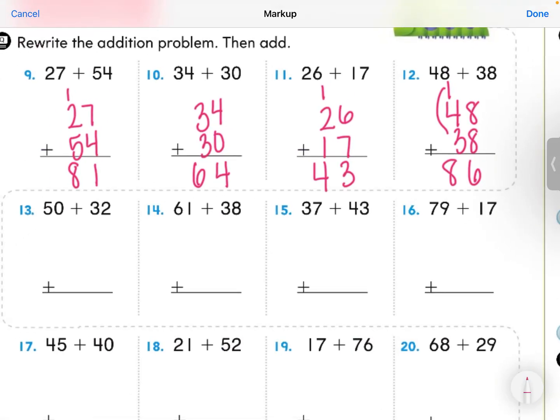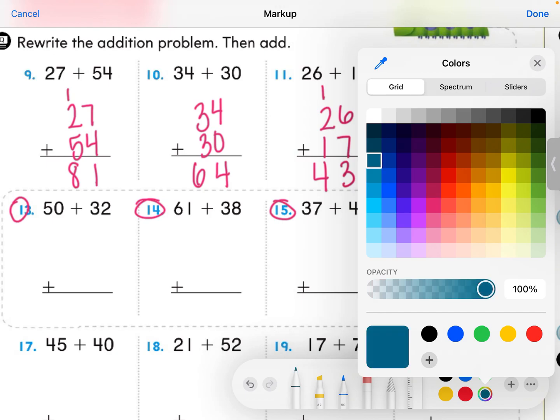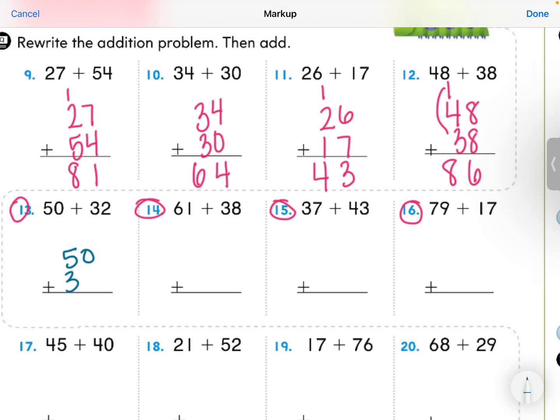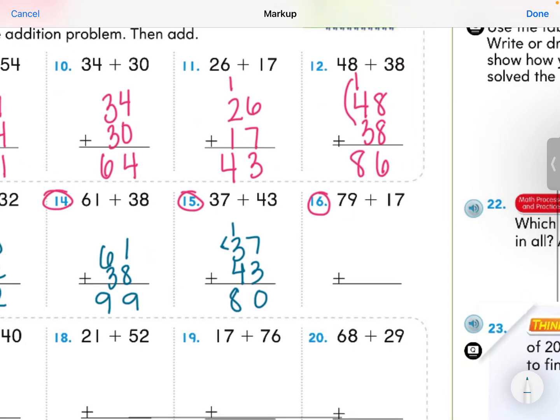Friends, if you feel like this is going really well for you, go ahead and work through this next row, which would be 13, 14, 15, and 16 on your own. Hit play when you are ready to see my answers. Let's see if we agree. 50 plus 32. 0 plus 2 is 2. 5 plus 3 is 8. 61 plus 38. 1 plus 8 is 9. 6 plus 3 is also 9. 37 plus 43. 7 plus 3 is 10. I'm going to put the 1 and the 3 together. That gives me 40 because it's worth 1 ten and that 3 is worth 3 tens. So 40 plus 40 is 80.